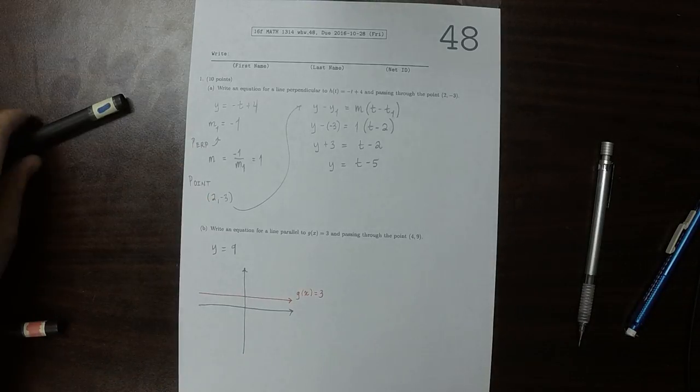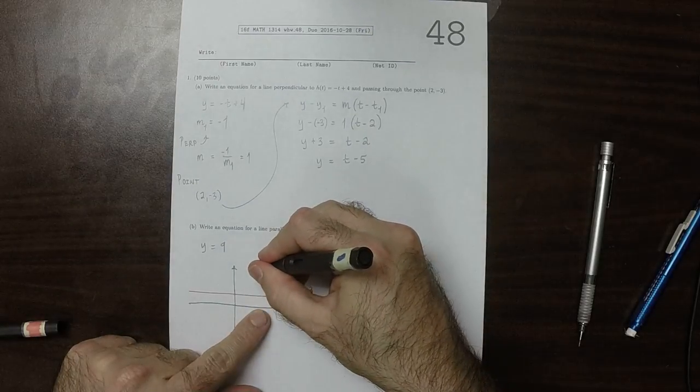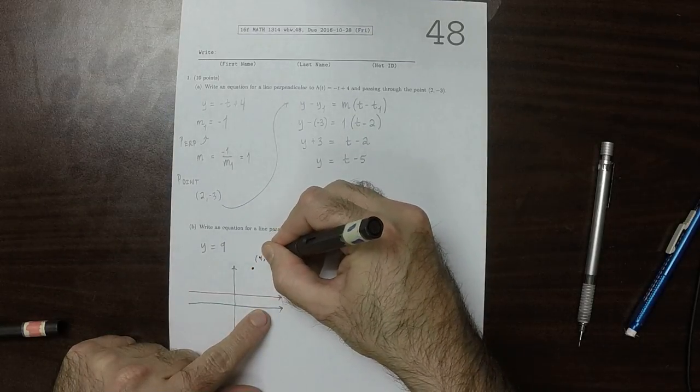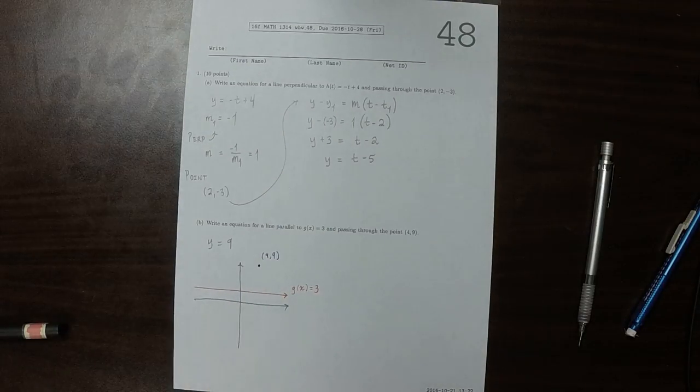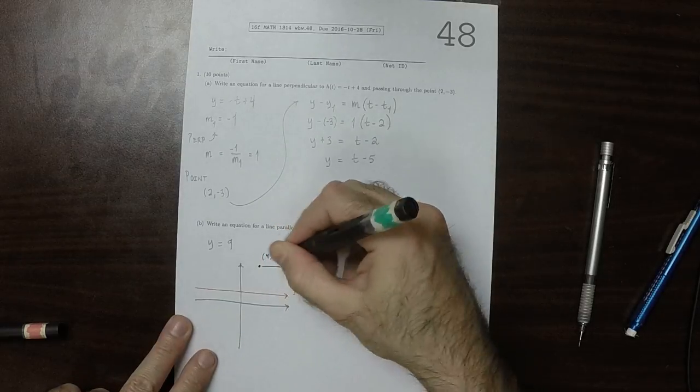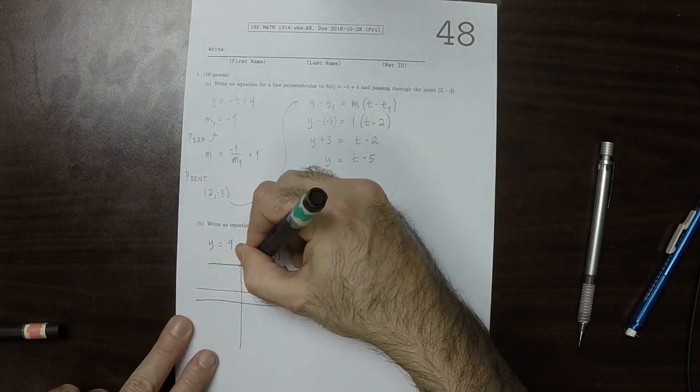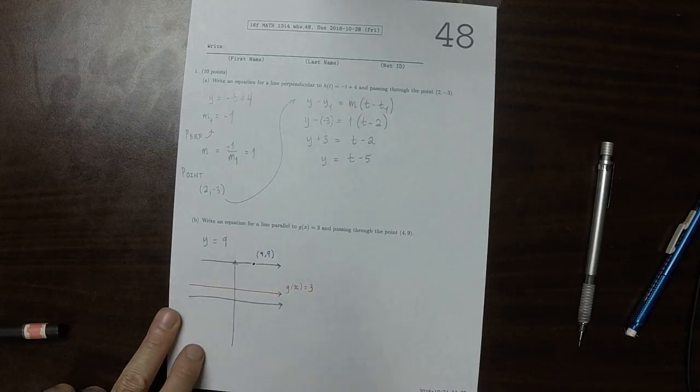And what we want is we want a line that's passing through this point 4, 9. And we want it to be parallel, so it's also going to have to be horizontal. And it's going to be at height 9. So that's the answer.